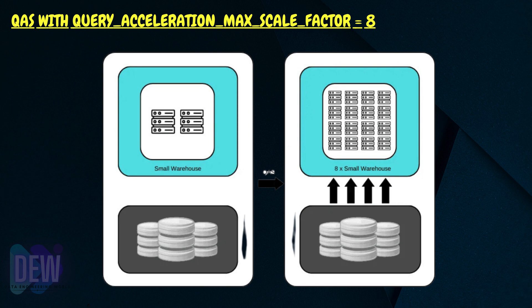The number of resources that the Query Acceleration Service can lease is controlled using the scale factor defined for the Query Acceleration Service. For example, a small warehouse with query acceleration enabled up to 8x scale factor detects a huge query, then the Query Acceleration Service deploys additional resources which help extract data faster. It effectively functions as a group of resources temporarily deployable alongside your current warehouse when needed, taking on some of the heavy lifting.